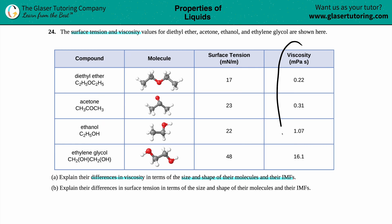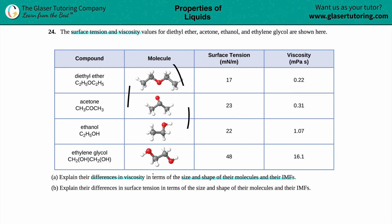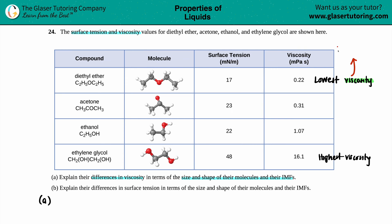For letter A, we are just looking at this column here for viscosity, and we are basically going to describe why the viscosity is changing in terms of size and shape of the molecules and their intermolecular forces. A viscosity is ranked in terms of a resistance to flow — a liquid's viscosity is basically just a measure of how resistant to flow a liquid is.